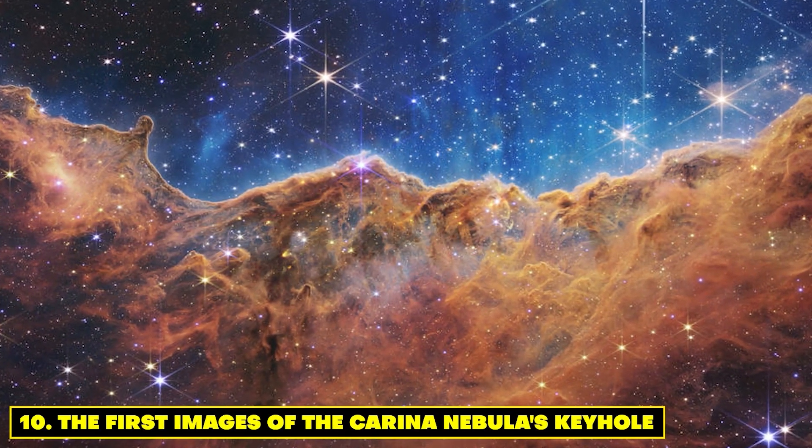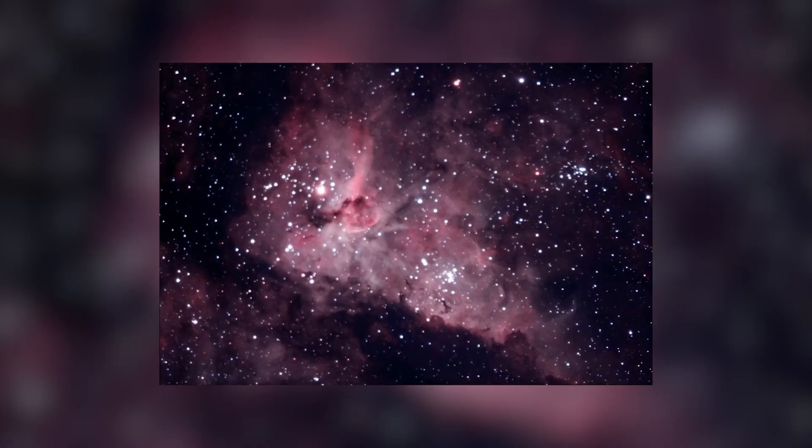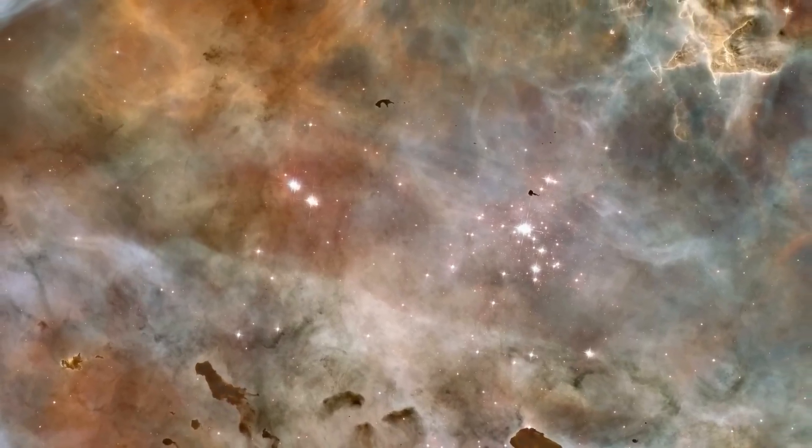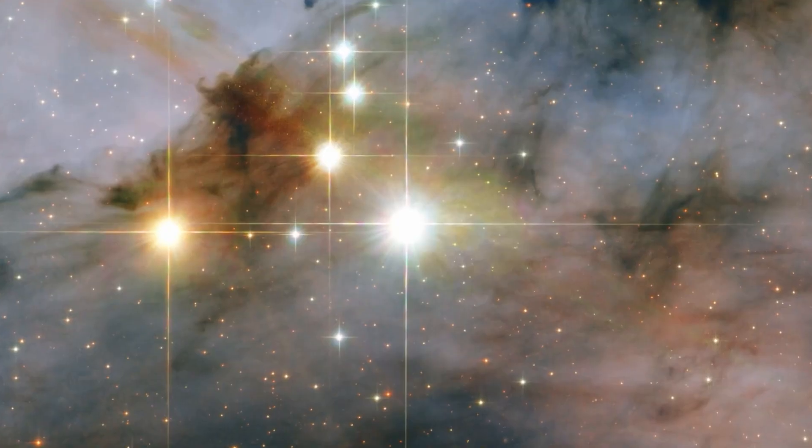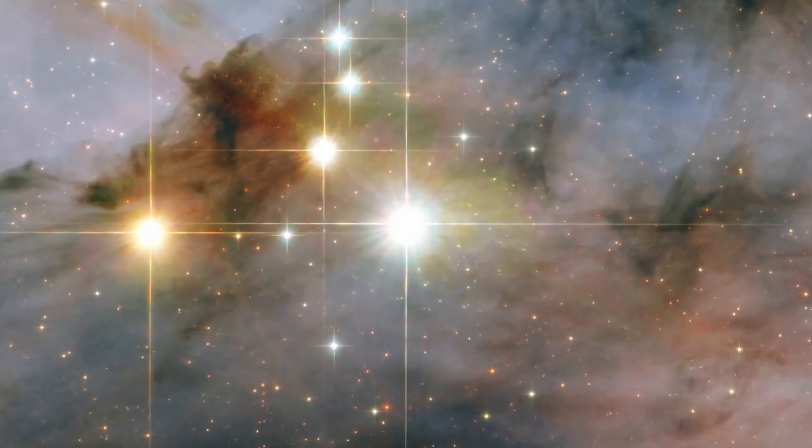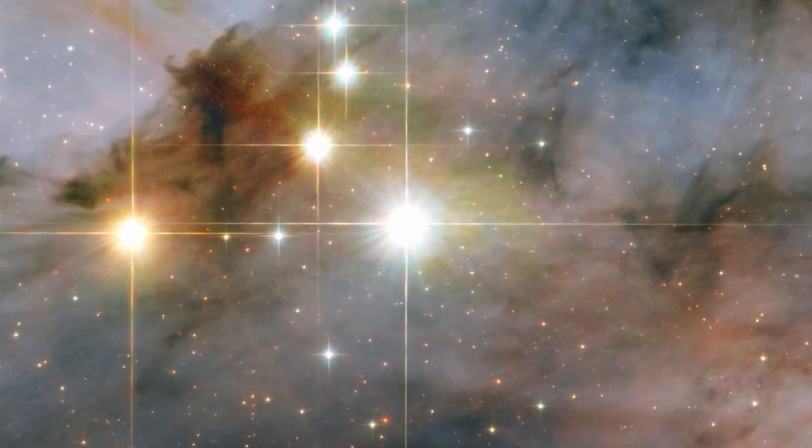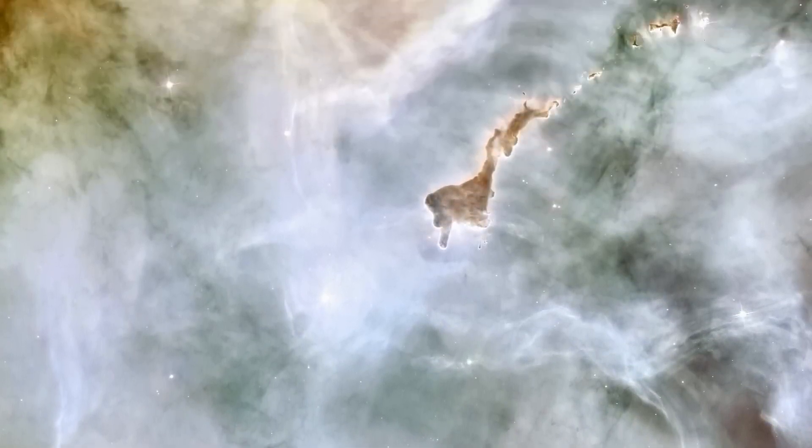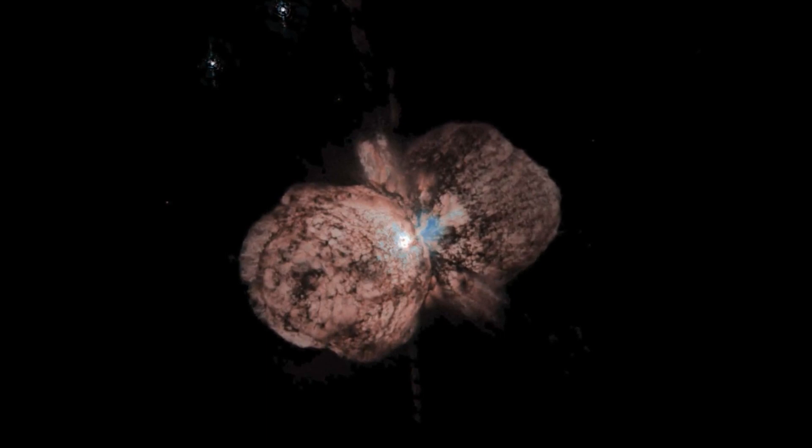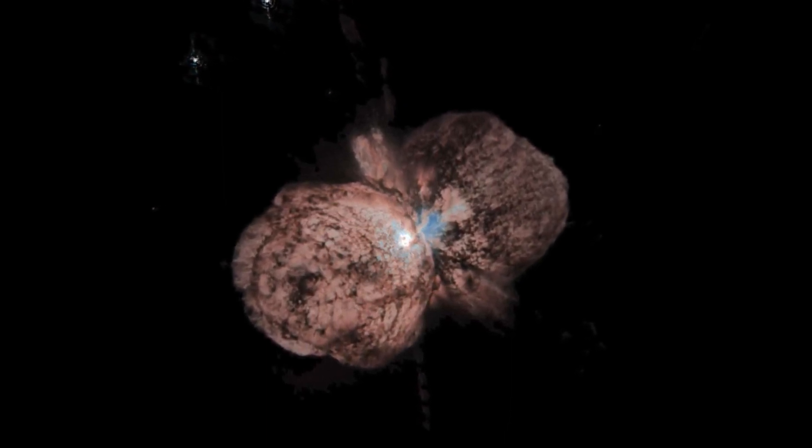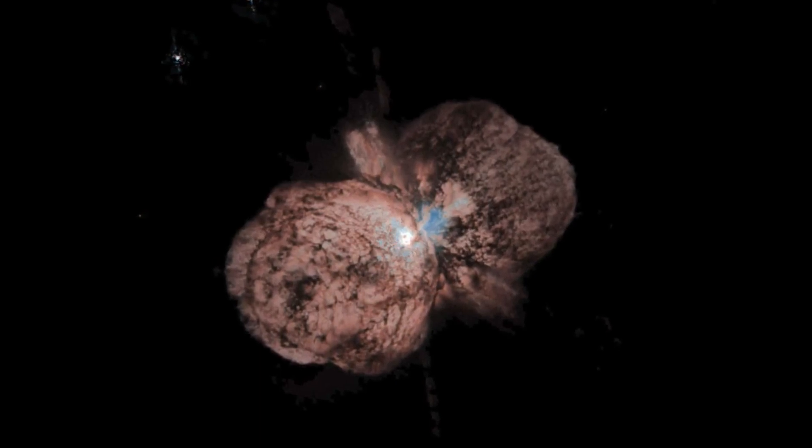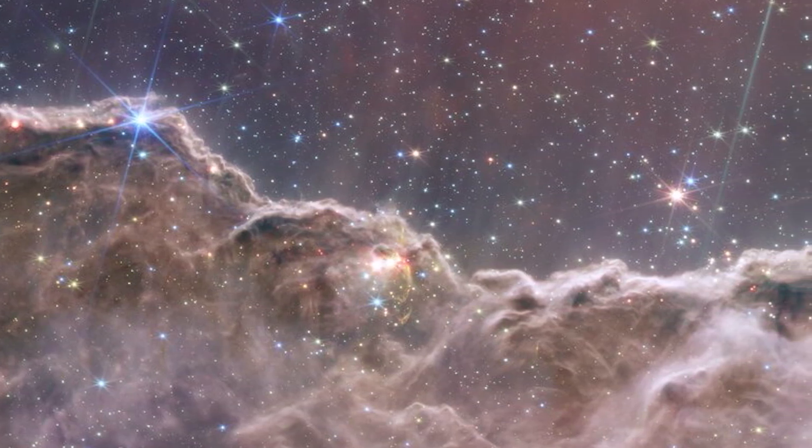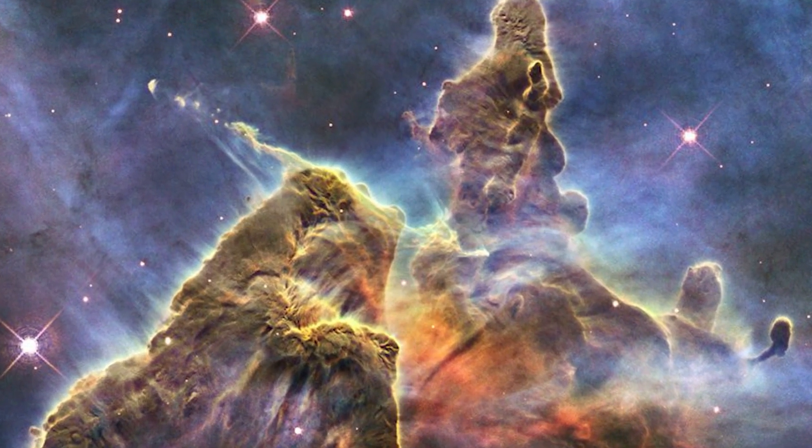Number 10. The First Images of the Carina Nebula's Keyhole. Intricately woven within the cosmos, the enigmatic Carina Nebula's keyhole emerges with astounding clarity through the discerning eye of the James Webb Space Telescope. This peculiar celestial region, reminiscent of a keyhole, beckons astronomers with its ethereal wisps of gas and dust. The keyhole's remarkable visage acts as a masterpiece etched by the universe itself, inviting inquisitive minds to explore the mystifying processes that sculpt such intricate structures in the vast expanse of interstellar space. This serendipitous revelation grants us a glimpse into the boundless artistry of the cosmos, where beauty emerges from the mesmerizing choreography of celestial forces.